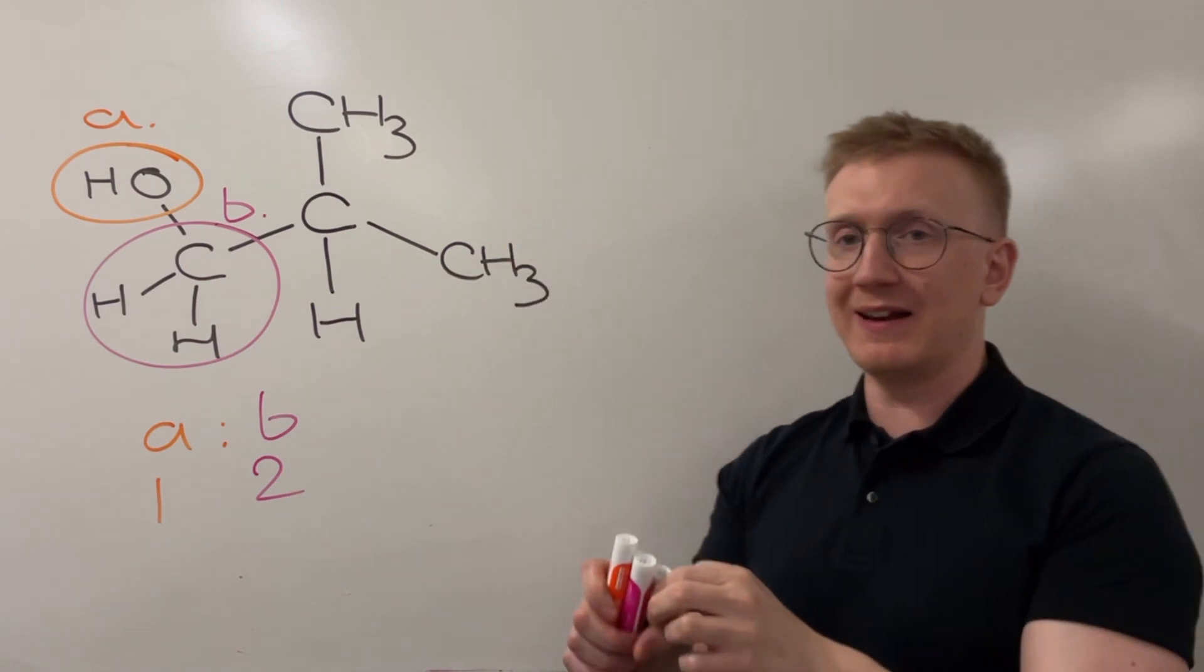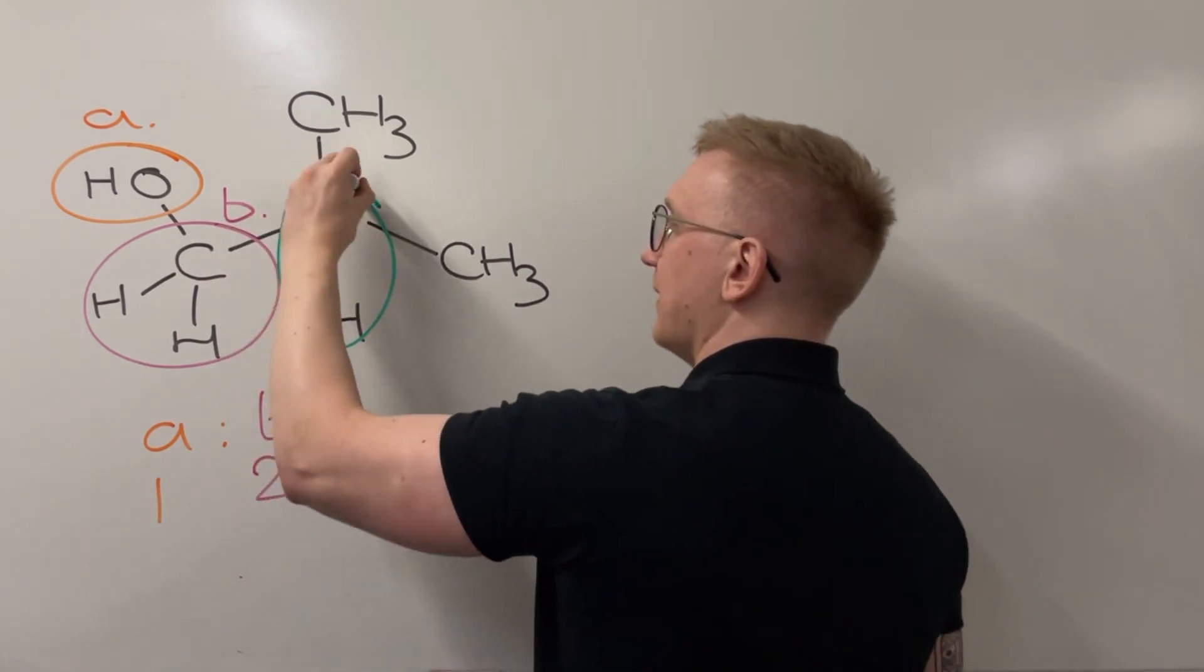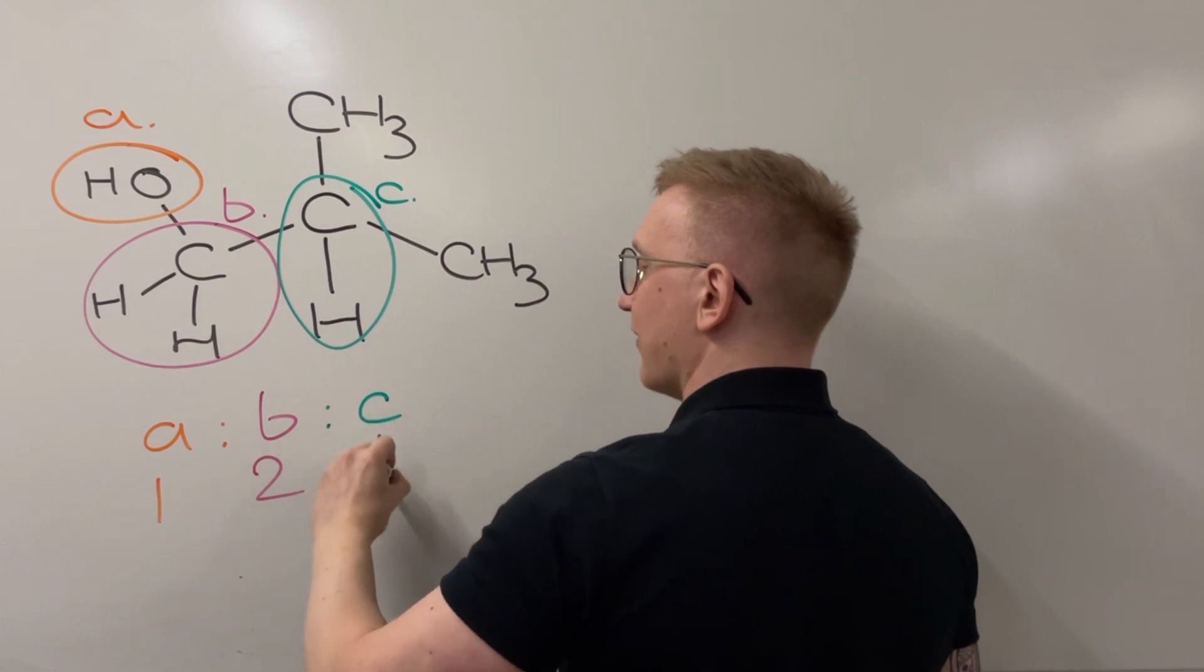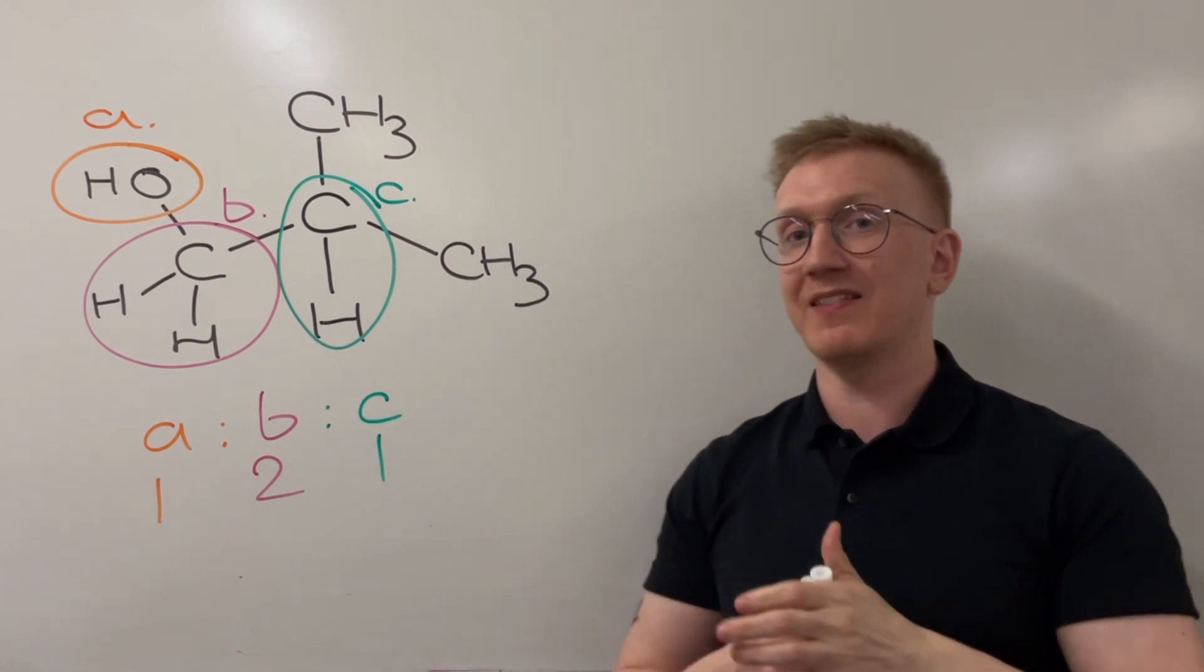Moving up the chain a little bit, and you guessed it, this CH group is going to be environment C, and environment C is going to have a one ratio compared to the other peaks.